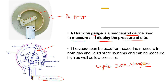The Bourdon gauge is a pressure measuring device that shows readings locally. For example, if you are a field operator going on a field visit, and there is an ammonia feed pump, you can simply see what the pressure is at the suction and what the pressure is at the discharge — locally. That is the perfect local indication.